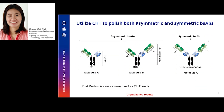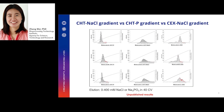In our study, three BsAb molecules were chosen. Molecules A and B belong to asymmetric format, while molecule C belongs to symmetric BsAb format. The performance of CHT resin for BsAb polishing was evaluated in comparison with a typical cation exchange resin. Both sodium chloride and phosphate gradient elution were performed for CHT, while only sodium chloride gradient elution was explored for cation exchange. So with three BsAb molecules and three conditions, nine runs were done in total.